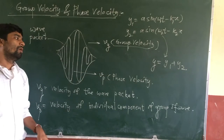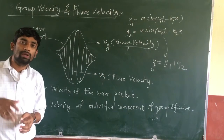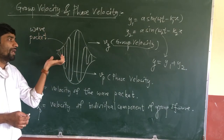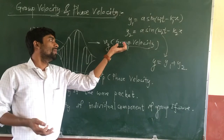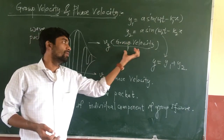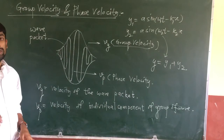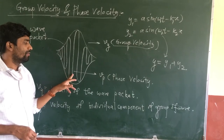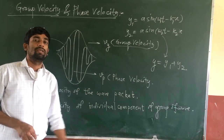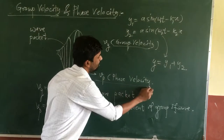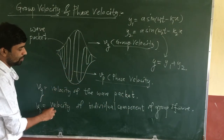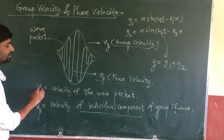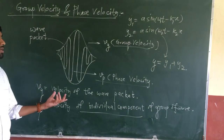Why is it called group velocity? Because there are two or more waves. When two or more waves superimpose, they form a wave packet — hence there is a group — and their velocity is known as group velocity, denoted vg. Phase velocity is the velocity of the individual component wave present within the group.